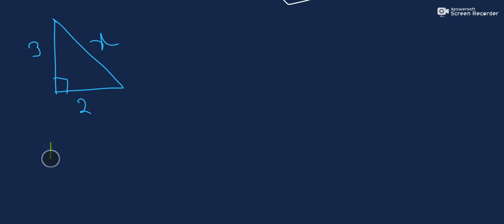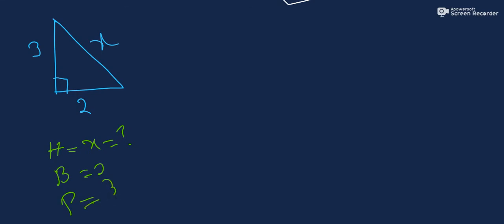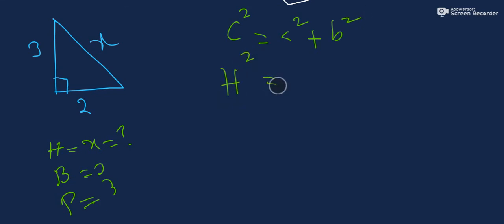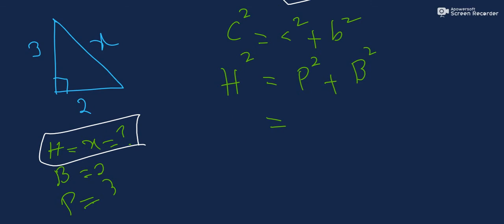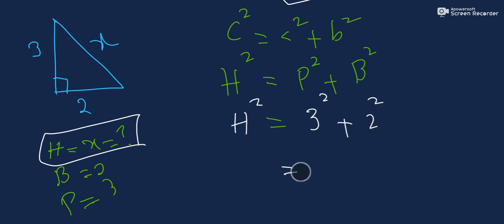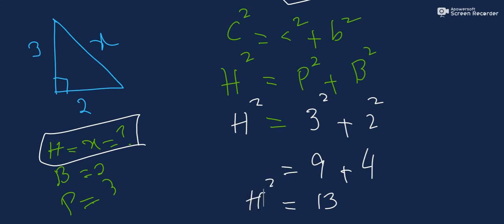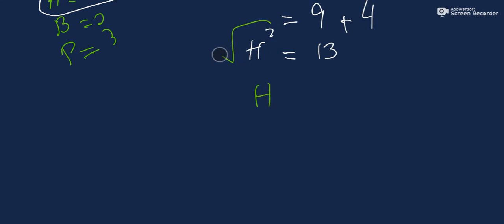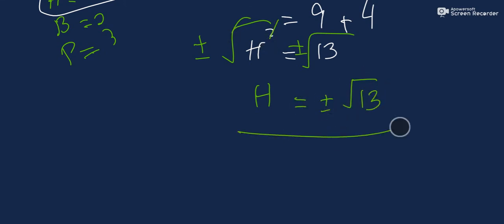Here is example two. Two legs are given: the perpendicular A equals 3 and the base B equals 2, and we need to find the hypotenuse H. Using H squared equals A squared plus B squared: H squared equals 3 squared plus 2 squared, which is 9 plus 4 equals 13. Taking the square root, H equals plus or minus the square root of 13.